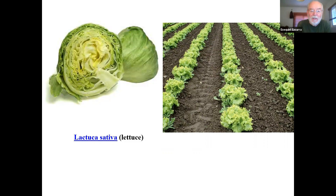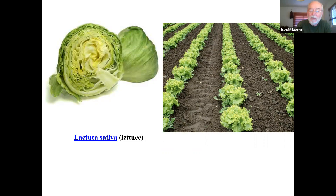We talked a little bit about the properties of some Asteraceae to open their disk — the disk of the capitulum — and disperse the seeds through the wind through the development of fleshy pappus. Now we're going to see some of the economic uses of the Asteraceae, starting with probably the most commonly known plant of the Asteraceae: Lactuca sativa, the common lettuce.